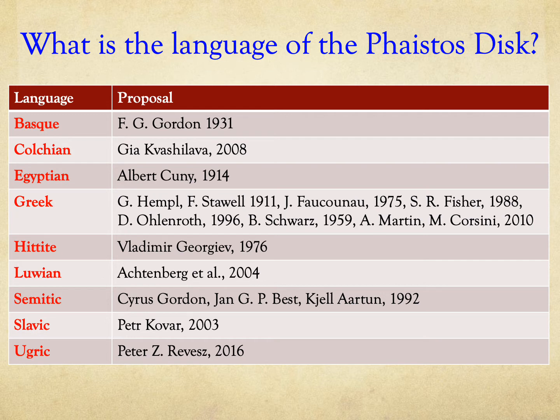For over a century, many researchers tried to decipher the inscription. They proposed a wide range of possible languages for the inscription. In this video, we determine which languages can be excluded from consideration using a computer algorithm.